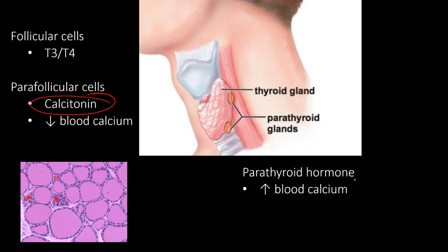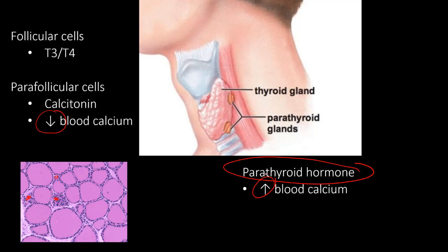Calcitonin and parathyroid hormone do opposite things — they come from two different glands. Calcitonin decreases blood calcium, whereas parathyroid hormone increases it. The follicular cells that release T3 and T4 affect metabolism.